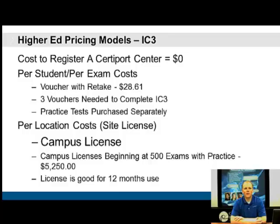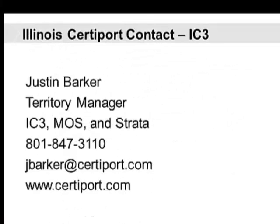In higher education, setting up a CertiPort Testing Center also costs nothing. The voucher cost remains $28.61, and three vouchers are still required for IC3 completion. The higher education campus license differs slightly — you get 500 exams with practice tests for $5,250, valid for 12 months.